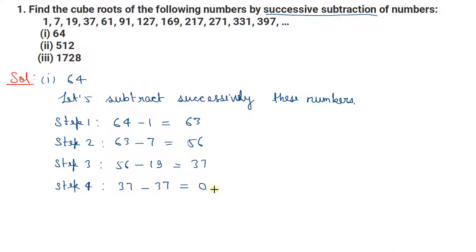यहाँ पर zero आ गया, उसके बाद से कुछ करना नहीं है। Zero आने के बाद समझ जाइए कि जितने steps में यह zero आया है, that step number is the cube root of 64.